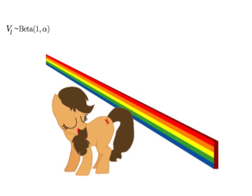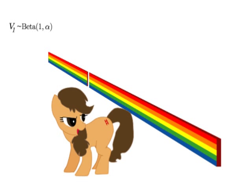At the first iteration, draw a proportion for pony to break, say v1, from a beta 1 alpha distribution. Set the first weight equal to the length of the first broken piece, which is v1. The remaining portion of the stick is 1 minus v1.